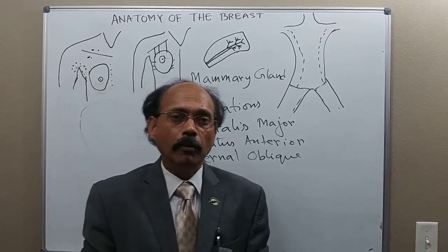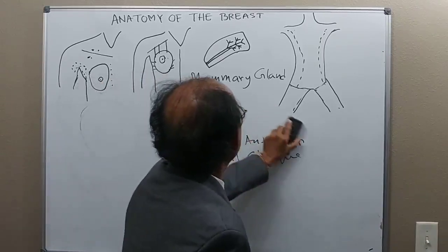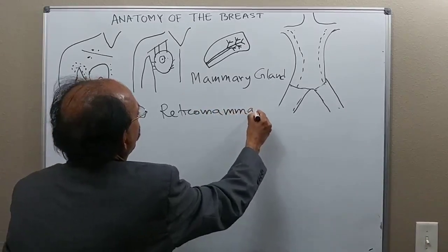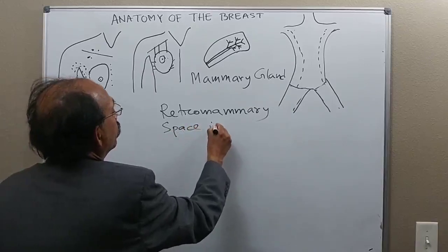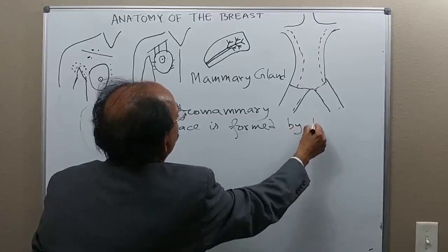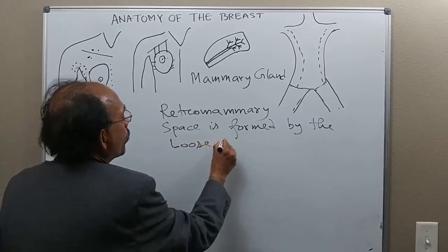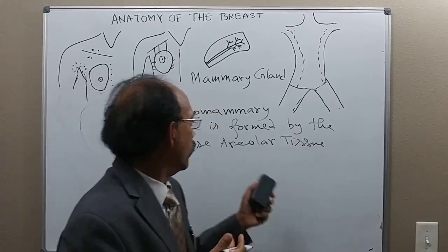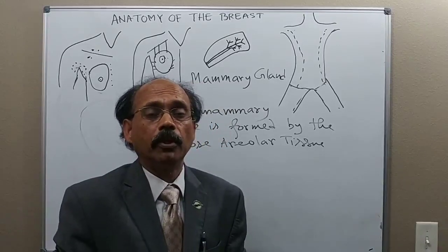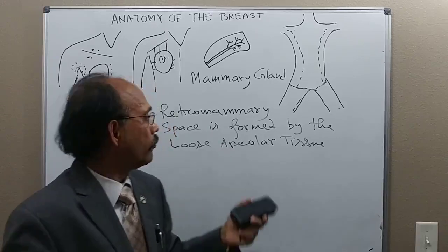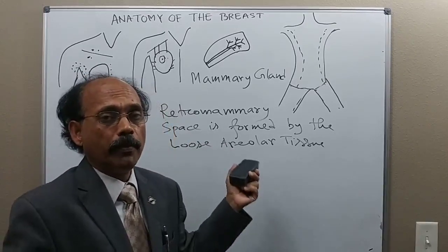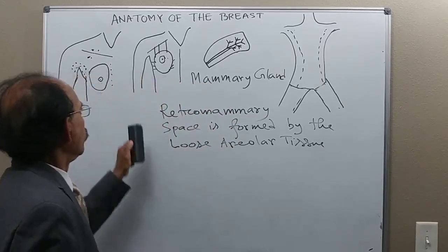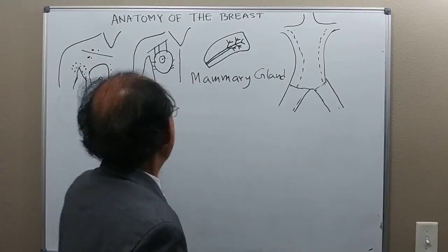There is loose areolar tissue behind the breast that forms the retromammary space. This space is formed by loose areolar tissue and separates the posterior aspect of the breast from the pectoral fascia. It is also called the retromammary bursa. Due to this retromammary space or bursa, the breast can be moved upward, downward, and side to side.